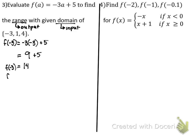The next ingredient after negative three that it's asking for is one. So f of one equals negative three times one plus five. What's negative three times one? Negative three. What's negative three plus five? Two. That means when I put in the ingredient of one, my output will be two. There's only one output.